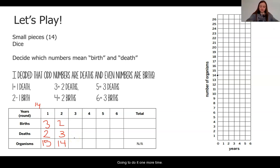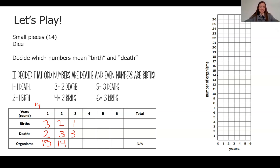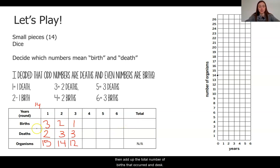I'm going to do it one more time. I have a 5 and a 2. A 5 means 3 deaths and a 2 means only 1 birth. So this time there are more deaths than births. I'm going to add 1 in, that will make 15, but then I have to take 3 out for my 3 deaths — 14, 13 — and we only have now 12 organisms in my population. If I was going to continue playing, I would play 6 rounds and then add up the total number of births and deaths. I played this a little earlier with my friend, so I already have some data for us to look at.